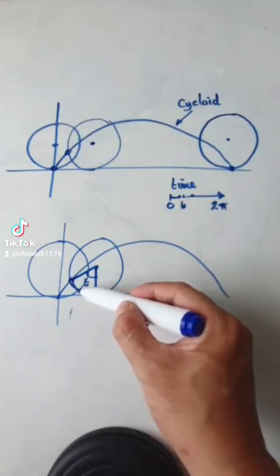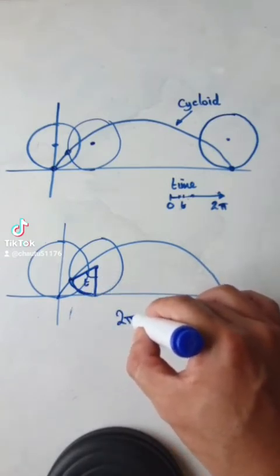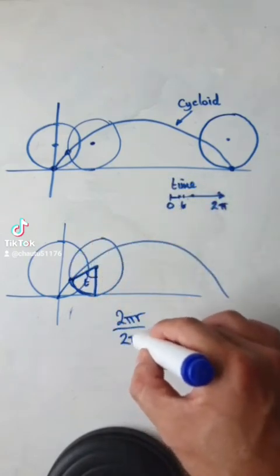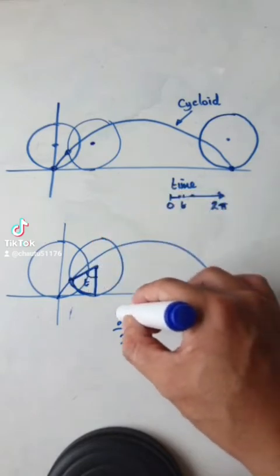So what is this length here? Well, that length there will be 2πr, which will give you the whole circumference, and then cut it into 2π equal pieces and then times t. Well, that length there is simply rt.